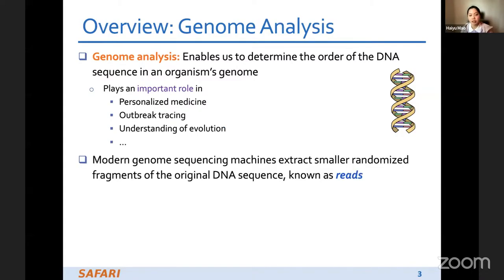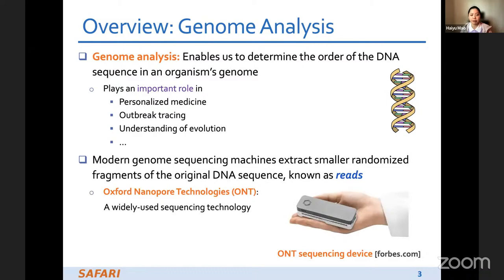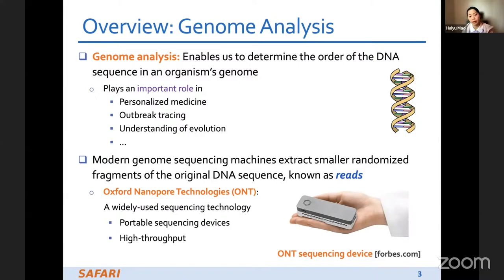Modern genome sequencing machines extract smaller randomized fragments of the original DNA sequence, which are known as reads. In this project, we mainly focus on Oxford Nanopore Technologies, known as ONT technologies, because it's a widely used sequencing technology. It also provides portable sequencing devices — as you can see on the right side, it's just palm-sized — and it has high throughput and is very cheap.